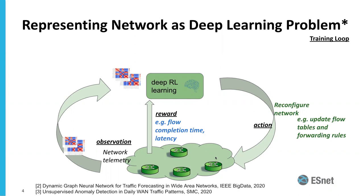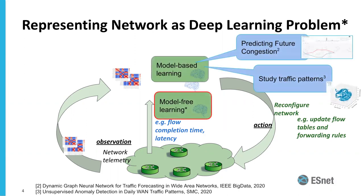Within deep learning approaches there are two ways of doing it: a model-based approach or a model-free approach. Model-based is where you predict what the future is going to look like, study patterns, and make decisions based on that. Model-free is where you don't know what the network is going to look like, but you learn what the actions should be. A simple example: looking at Google Maps to plan a trip to San Francisco Airport is model-based. But knowing that traffic is different at 9 a.m. versus 5 p.m. is model-free — you know the right action based on experience without explicitly modeling the network.